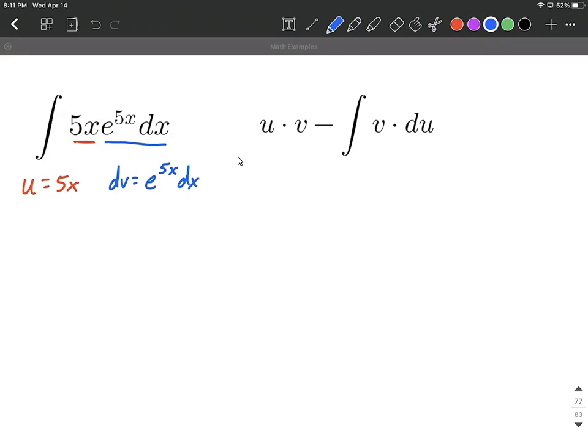All right, next we kind of go both directions on this. With our u, we're going to take its derivative and with our dv, we're going to take its antiderivative. So for u, the derivative here is du equals 5dx.